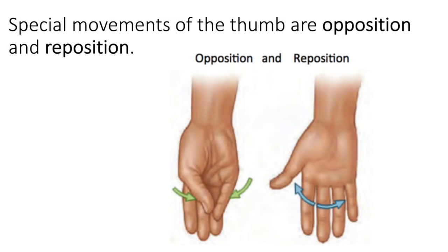Our last special movement involves the thumb. Bringing your thumb towards the middle of your hand and touching it to your pinky finger is called opposition — only the thumb does opposition. Bringing your thumb and pinky back to standard anatomical position is called reposition. All of these movements occur at different joints of the body.